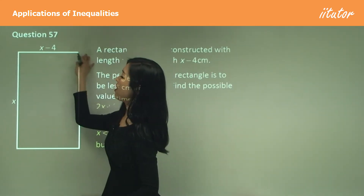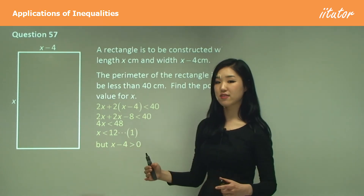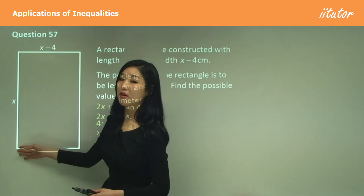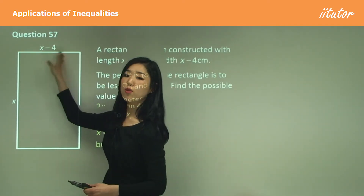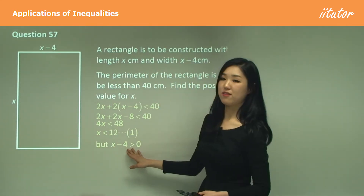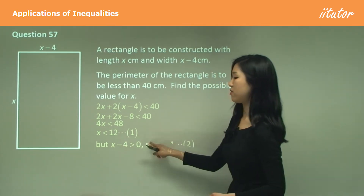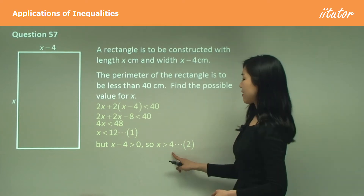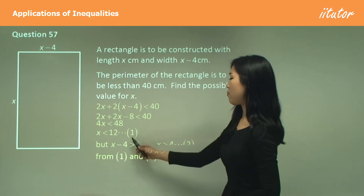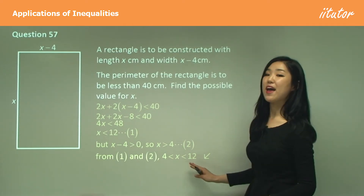Since x − 4 > 0, we get x > 4. Using the shorter side ensures validity. Combining both conditions, 4 < x < 12. Therefore the answer is x is between 4 and 12.